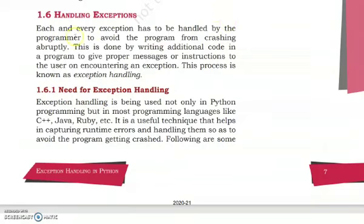Each and every exception has to be handled by the programmer to avoid the program from crashing abruptly. When we have a sudden stop or sudden crash, the entire code can be erased. To avoid such a problem, we handle the exception in a proper manner — we give proper instructions and proper messages so that our code does not get erased or corrupted. This is done by writing additional code in a program to give proper messages or instructions to the user on encountering an exception.